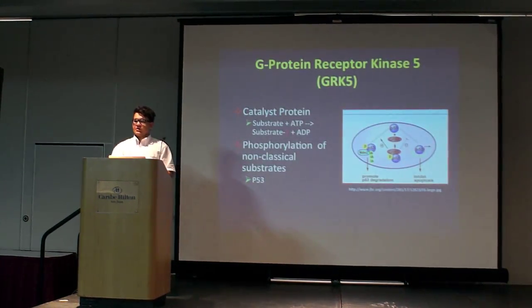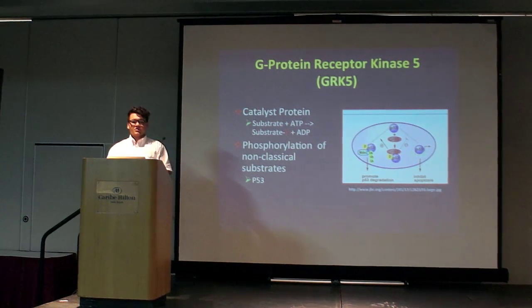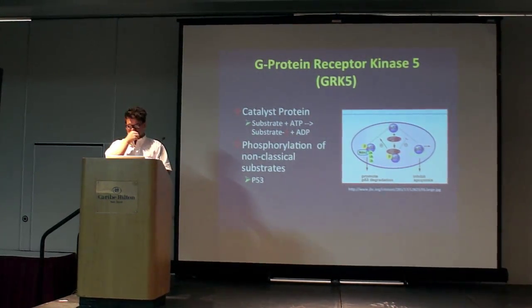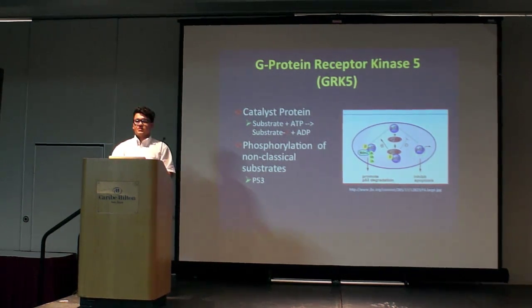G-protein receptor kinase 5 is a catalyst protein that phosphorylates a substrate. Our lab's interest is in the phosphorylation of non-classical substrates, specifically P53. When GRK5 phosphorylates the P53 ligand, P53 degradation occurs, and this thus inhibits P53-dependent apoptosis.